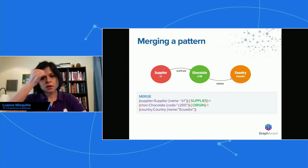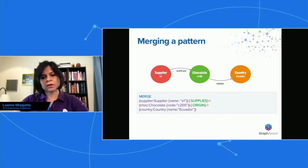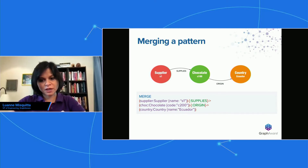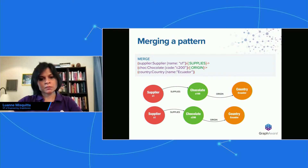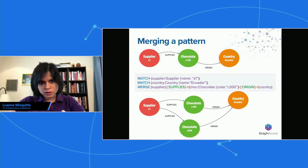Now look at the query below it — the supplier is the same, the country is the same, but we want the supplier to supply a new chocolate with code C200. You would hope you just get a new chocolate neatly connected up to the supplier and the country. But that is not what you get. You actually get the entire pattern replicated again, just with a different chocolate. If you think about it — always think match first. Cypher finds the supplier, looks for the supplier's relation to a chocolate with code C200, doesn't find it, stops, and says I can't match the pattern so I'm going to create the whole thing. This is almost never what you want.